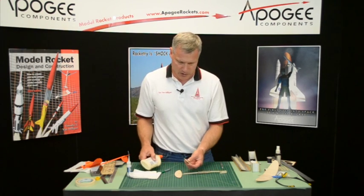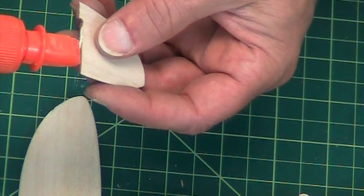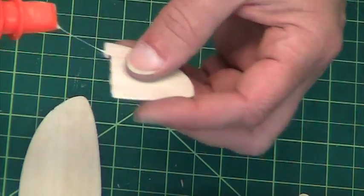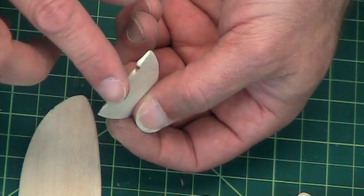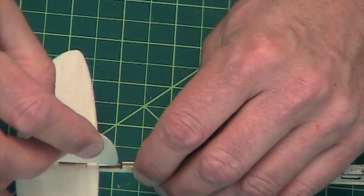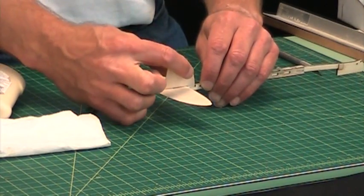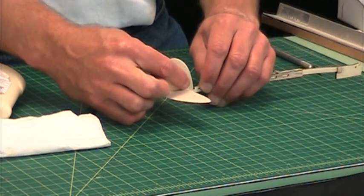All right, and now we'll go ahead and glue the vertical tail. So I put glue on the bottom edge, and put that in there and then slide it backwards so that it engages the front edge of that horizontal tail.